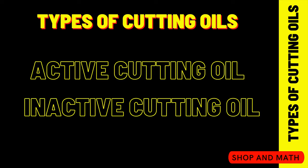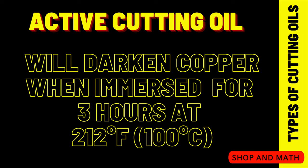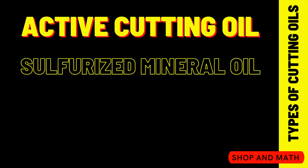The two main types of cutting oils are active and inactive cutting oils. Under active cutting oils there are three main categories: sulfurized mineral oils, sulfochlorinated mineral oils, and sulfochlorinated fatty oil blends. Active cutting oil will actually physically darken a strip of copper when immersed in the solution for three hours at 212°F.